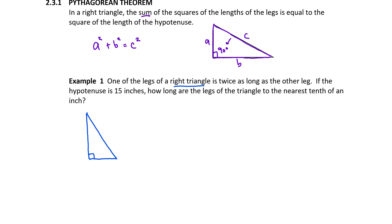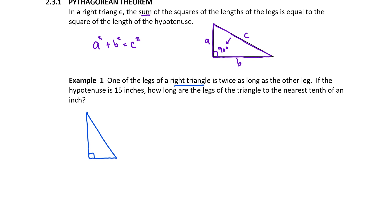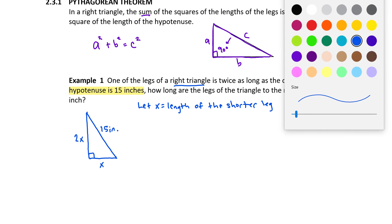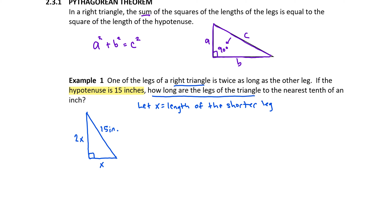I'm going to suppose that X is the length of the shorter leg, and I'll label that on the triangle as X. If that length is X, and the other leg — that vertical segment — is twice as long, then the length of the vertical segment is 2X. We're also told that the hypotenuse is 15 inches, so I'll include that on the graph. Remember, the hypotenuse is the segment opposite the right angle.